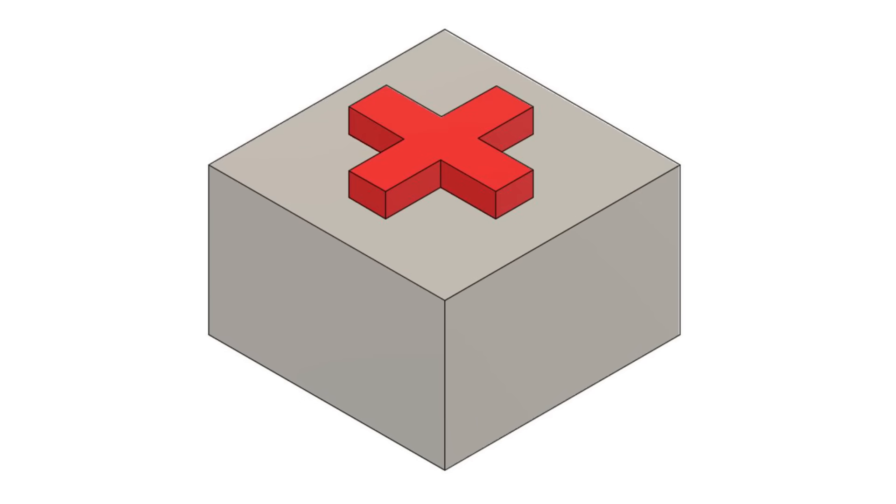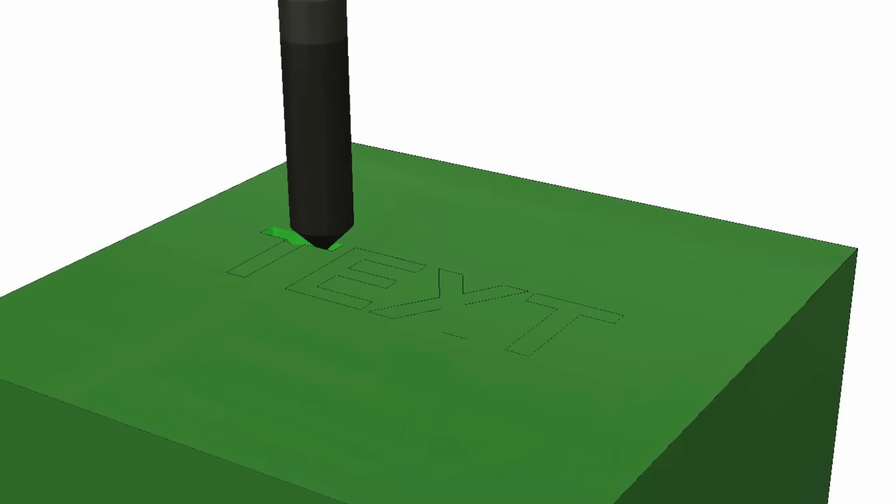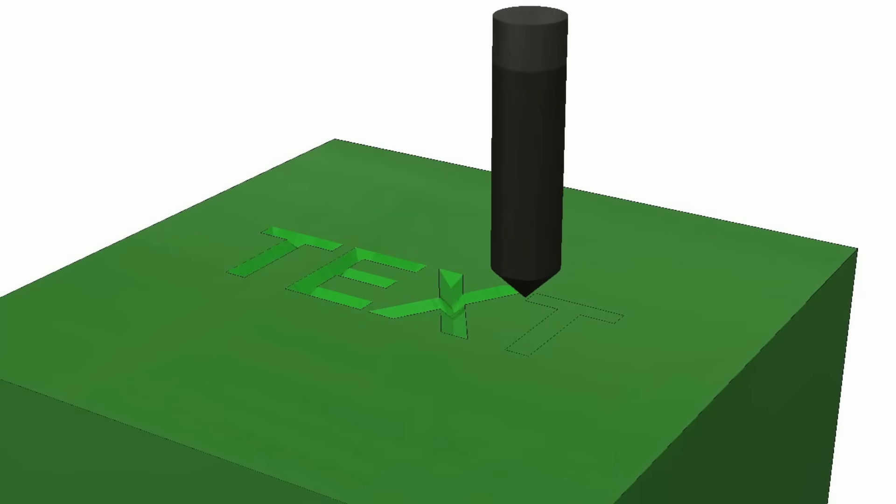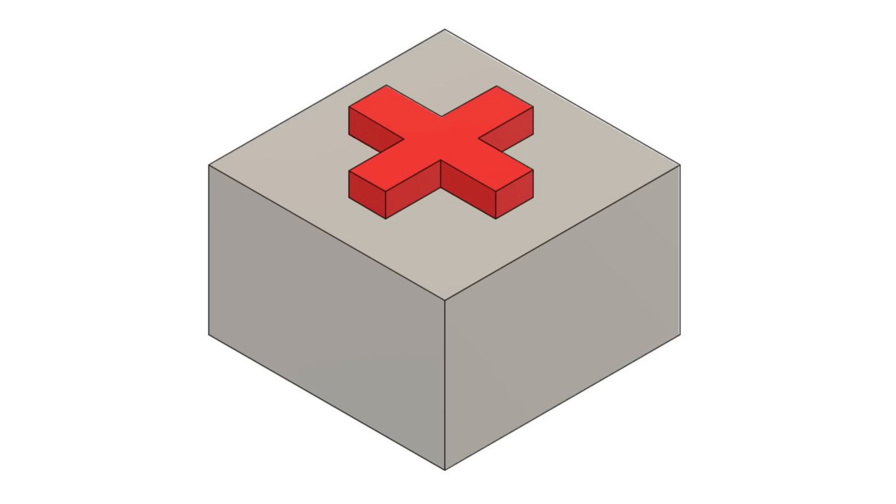Try and avoid raised text. Instead, make engraved text that can be machined with a V-bit end mill by removing material. Raised text requires machining out all of the surrounding material and many features of the text will result in nearly square internal corners which require very small diameter end mills to make.